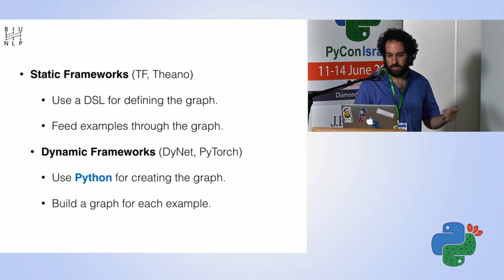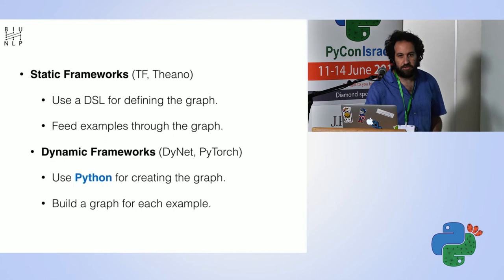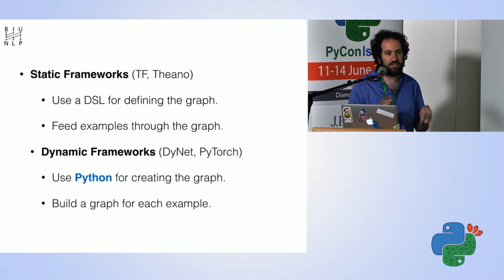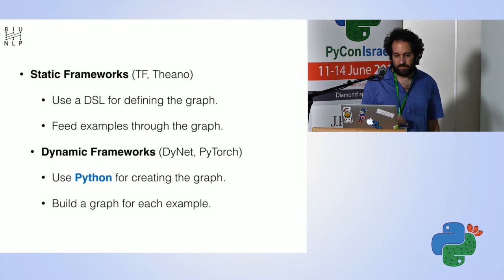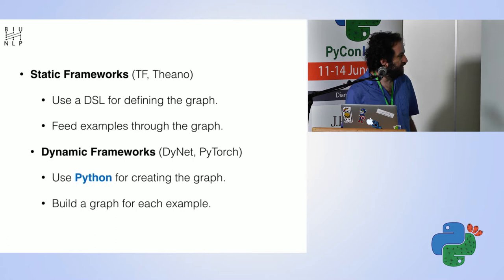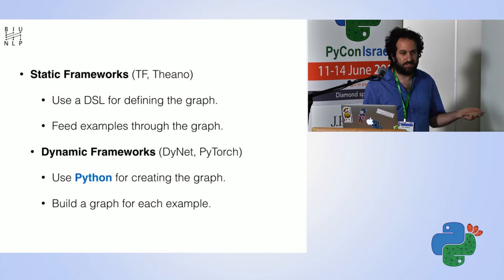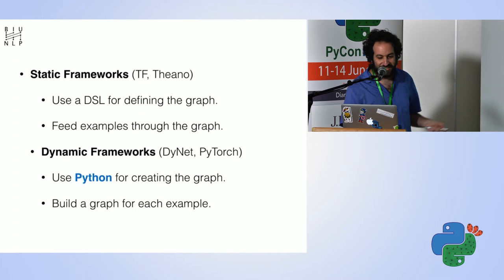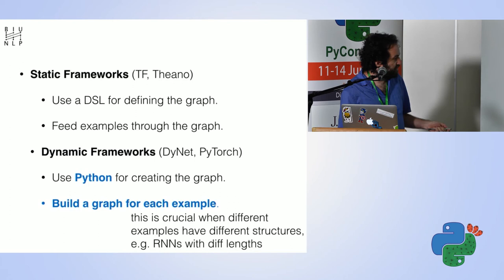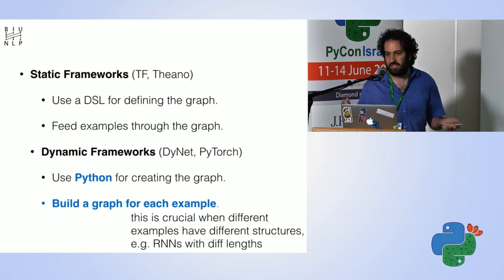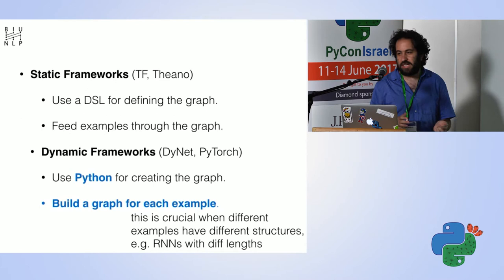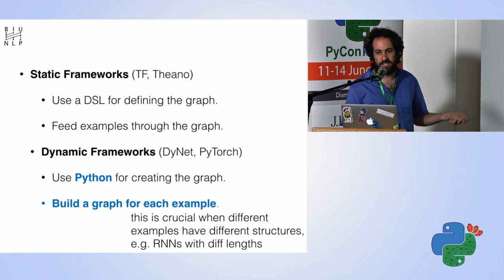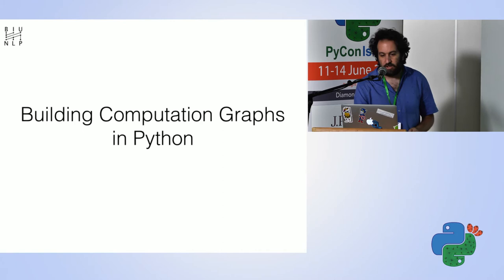The difference between static and dynamic is that in static frameworks, you use some kind of DSL to define your graph — it's a sort of Python but not really, a domain-specific language. Then you just feed examples through the graph you built. In the dynamic frameworks, you use pure Python to create the graph, and you build a new graph for each example. This matters where different examples have slightly different graphs — for example, in an RNN, every sequence has a different length, and building one graph per example is much nicer.